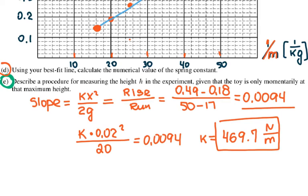For part e, they ask you to describe the procedure for measuring the height h in the experiment, given that the toy is only momentarily at the maximum height. So in order to measure to what height an object gets, I can have a camera and a ruler, and when the spring is rising up and then falling down, I can slow down the motion and detect to what height it rose. This is one of the ways.